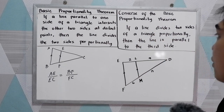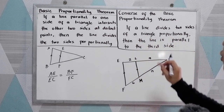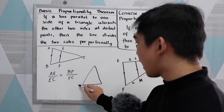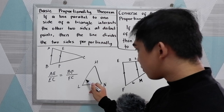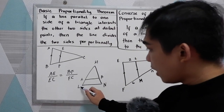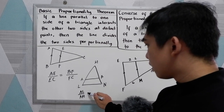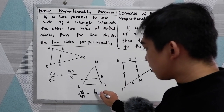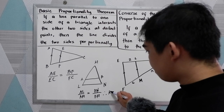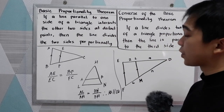Now, the converse of the basic proportionality theorem: if a line divides two sides of a triangle proportionally, then the line is parallel to the third side. So for triangle LMN with line AB, if AL over AM is equal to BN over BM, then AB is parallel to LM. That is the converse of the proportionality theorem.